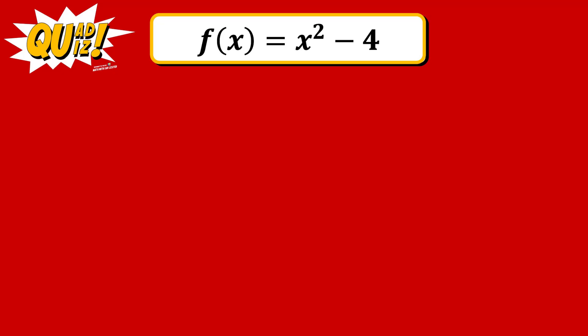To answer the vertex and the maximum and minimum values, let's start by identifying the coefficients of this given quadratic function. The coefficients a, b, and c follow the same pattern as in a quadratic equation. a is the coefficient of x squared, b is the coefficient of x, and c is the constant.